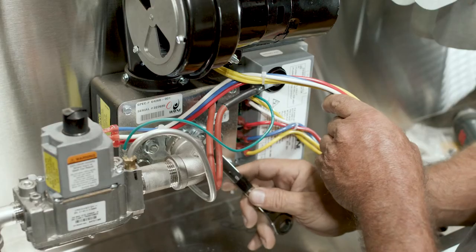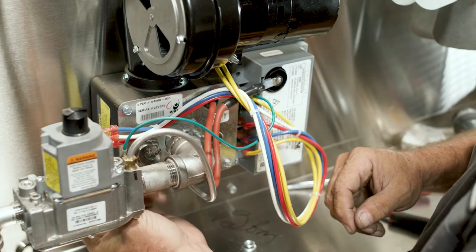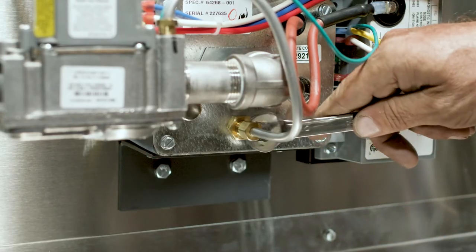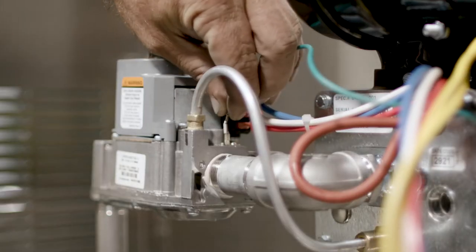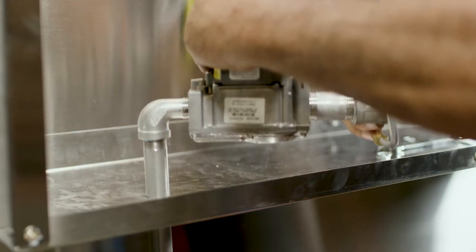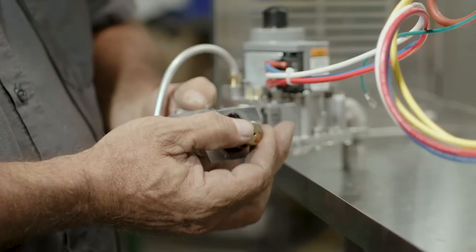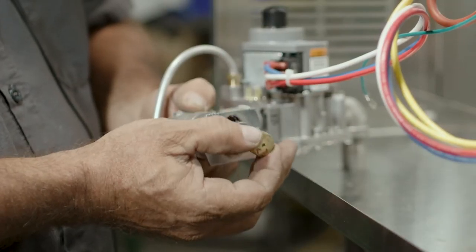The next step is to replace the main orifice. Using a half-inch wrench, remove the two nuts and disconnect the gas line. Disconnect the ground wire and remove the gas line assembly. Then remove the main orifice and replace it with the new orifice included in the conversion packet.